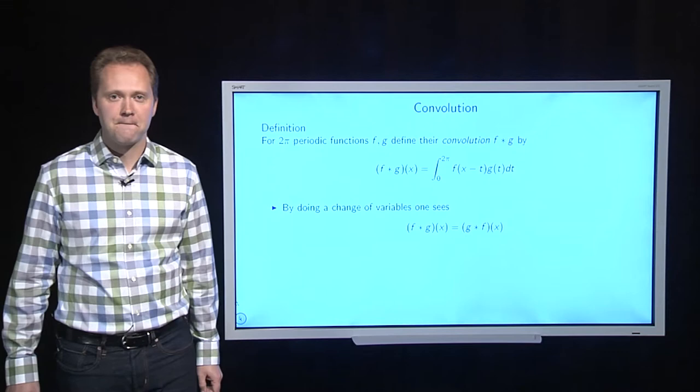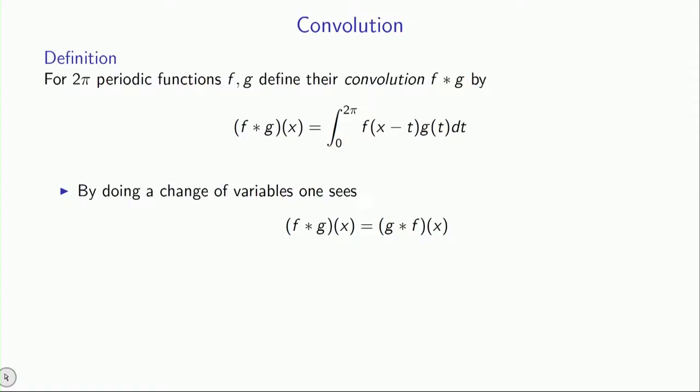What is a convolution? Well, a convolution between two pi periodic functions, f and g, is denoted by f, and this is not supposed to be f times g. It's f convolved with g, and we use that star to denote the convolution. And what it is, is that it's an integral from 0 to 2 pi, where you sort of mix the two functions. You take f of x minus t times g of t.